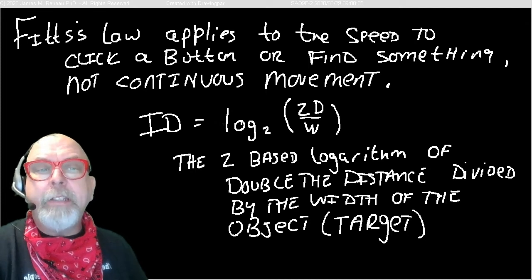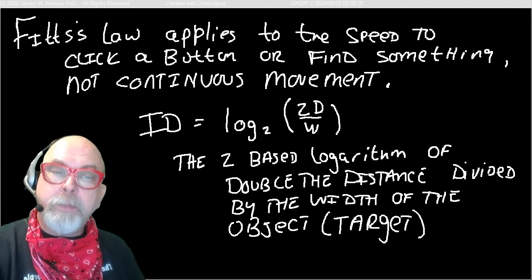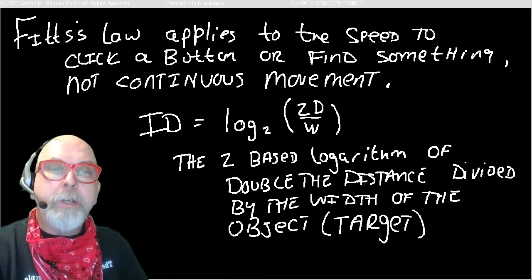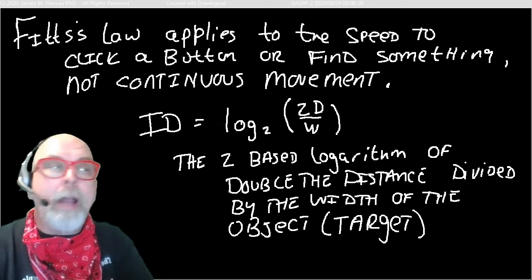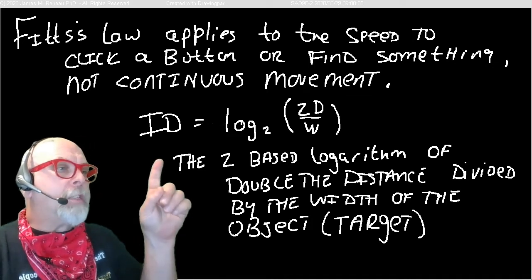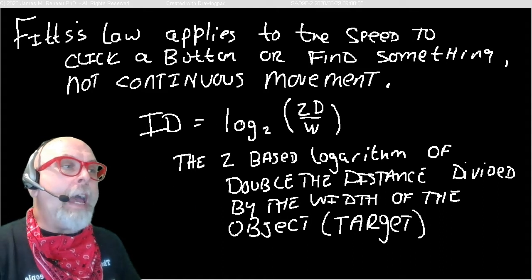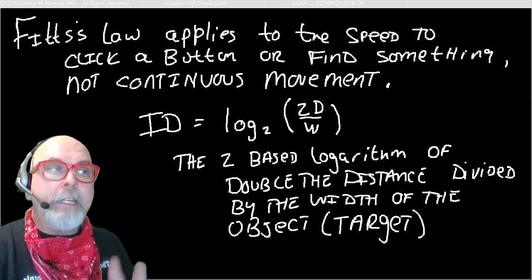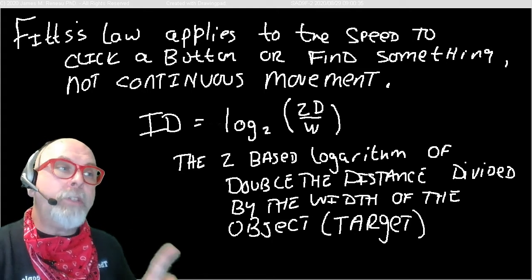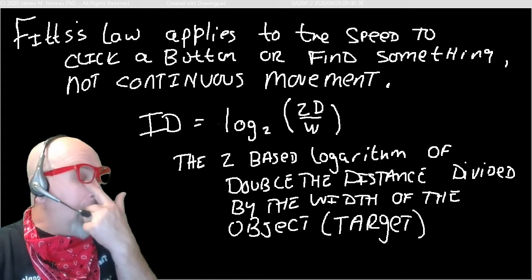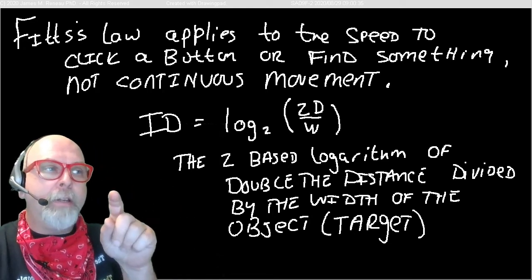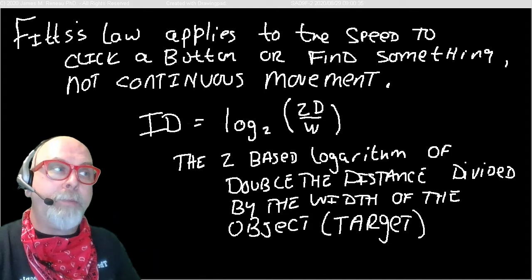Now, Fitz's law doesn't deal with continuous motion, how long it takes to move something from one point to another, but just how long it takes to acquire a target, how to pick something up. And his formula looks like this. It's ID, and ID is short for index of difficulty. ID equals the log base 2, so the logarithm base 2, of two times the distance to the object divided by the width of the object.